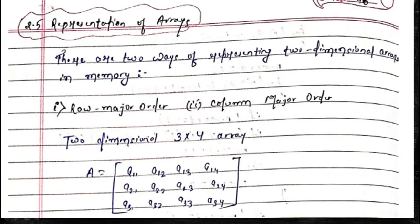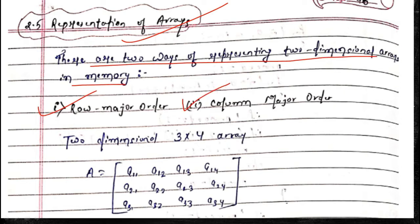In this video we will be talking about representation of arrays. There are two ways of representing two-dimensional arrays in memory: the row-major order and the column-major order. This topic is very easy.